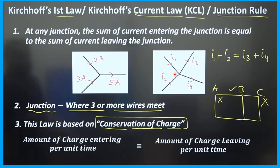Consider a second example: I1 and I2 are two currents entering the junction, and I3, I4 are two currents leaving. According to Kirchhoff's law, I1 plus I2 equals I3 plus I4. This law is based on conservation of charge — charge can neither be created nor destroyed. The amount of charge entering per second equals the amount leaving per second.